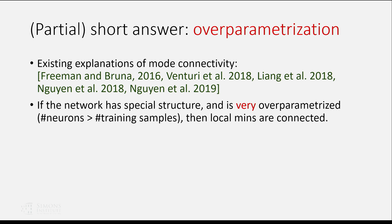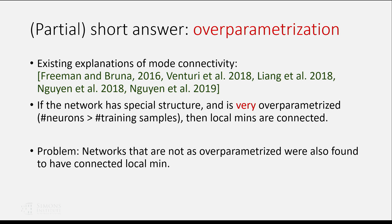Bottom line: all of these analyses are very nice, but in practice networks are not as over-parameterized as these theories require. Yet even without that level of over-parameterization, people are still able to find paths connecting different local minima. That's why the over-parameterization explanation is only a partial answer, and in our result we give another partial answer — another regime where this can be proved.